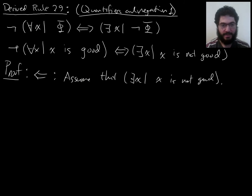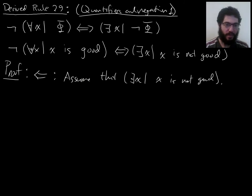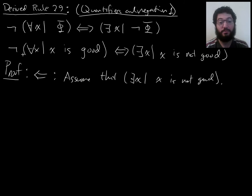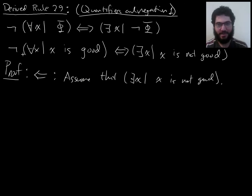So now my goal is to prove that it's not the case that everything is good. So how do I prove a not-for-all? I don't have a special rule just for that. I have a rule for proving for-alls — universal generalization — and I have a rule for using for-alls — universal instantiation — but I don't have anything that helps me work with not-for-all.